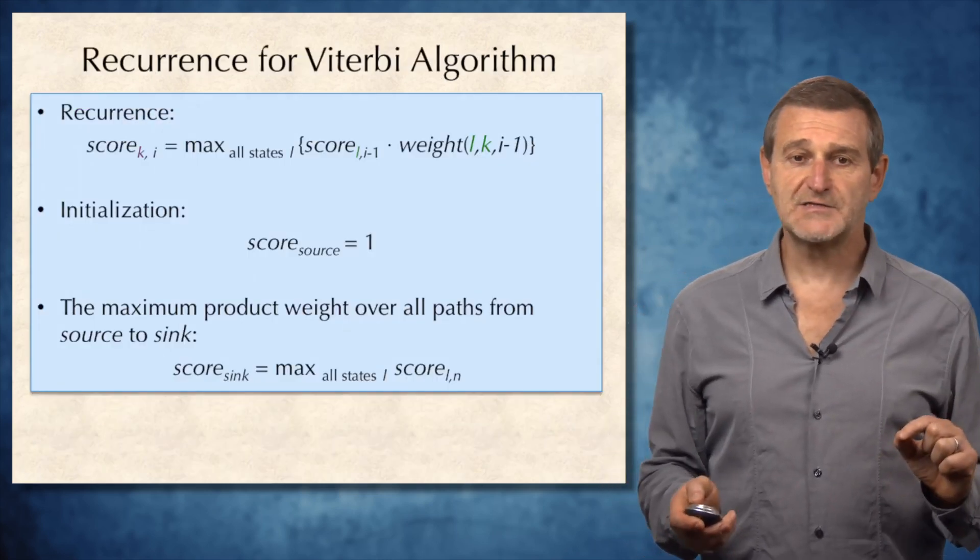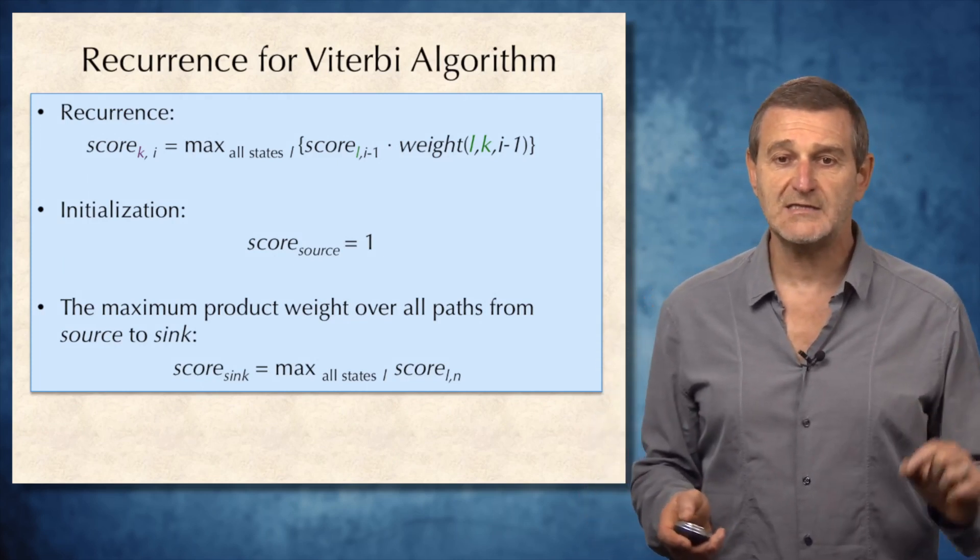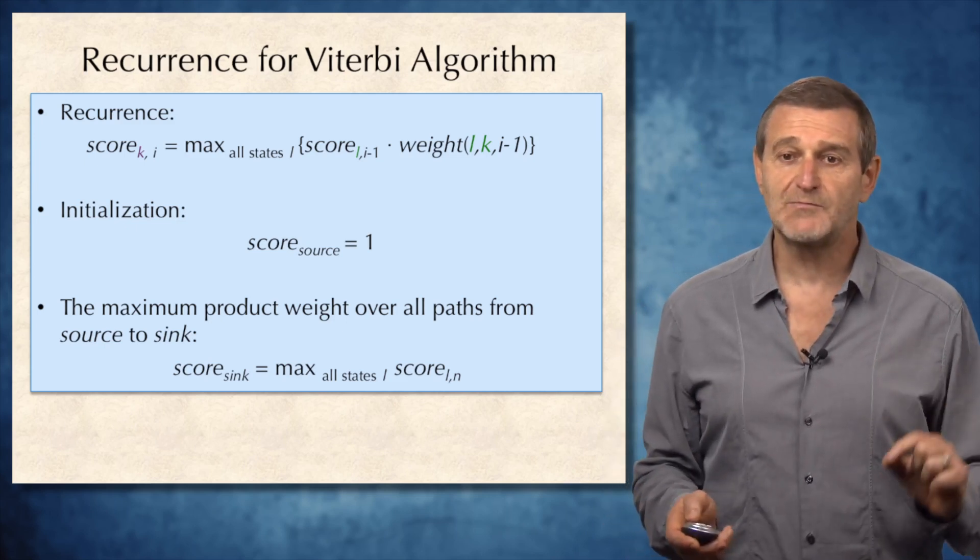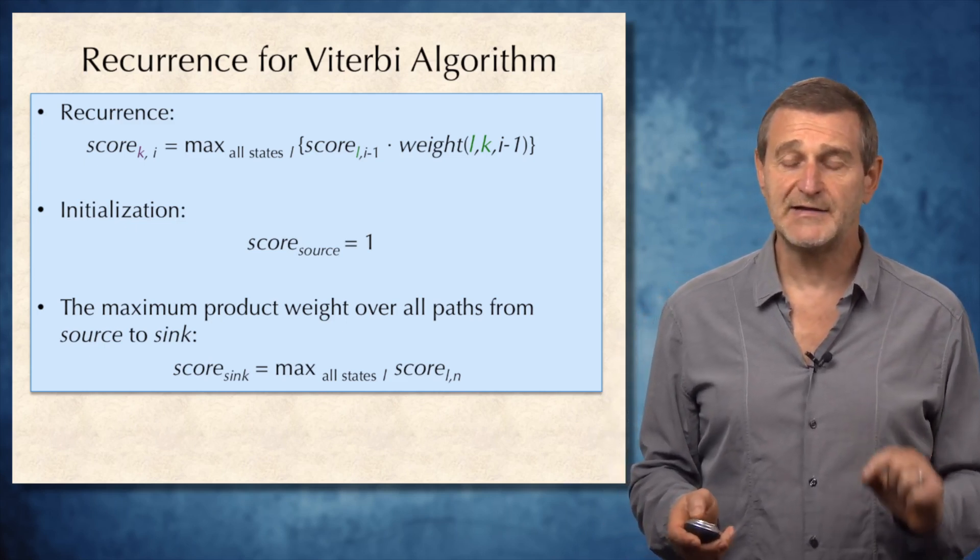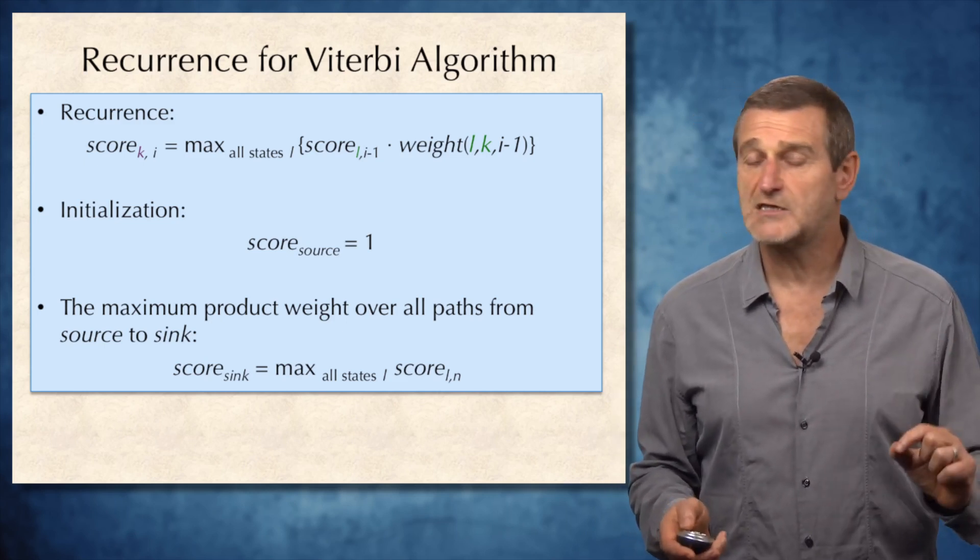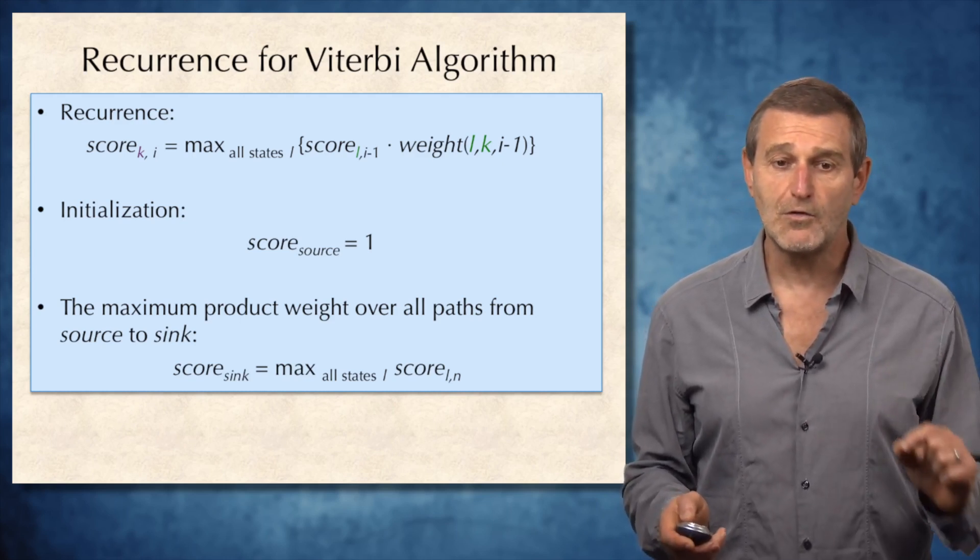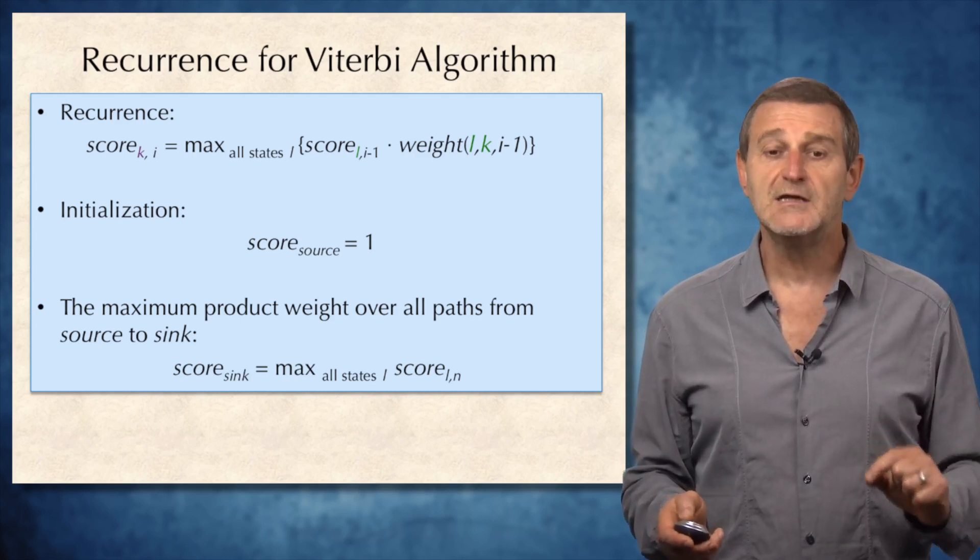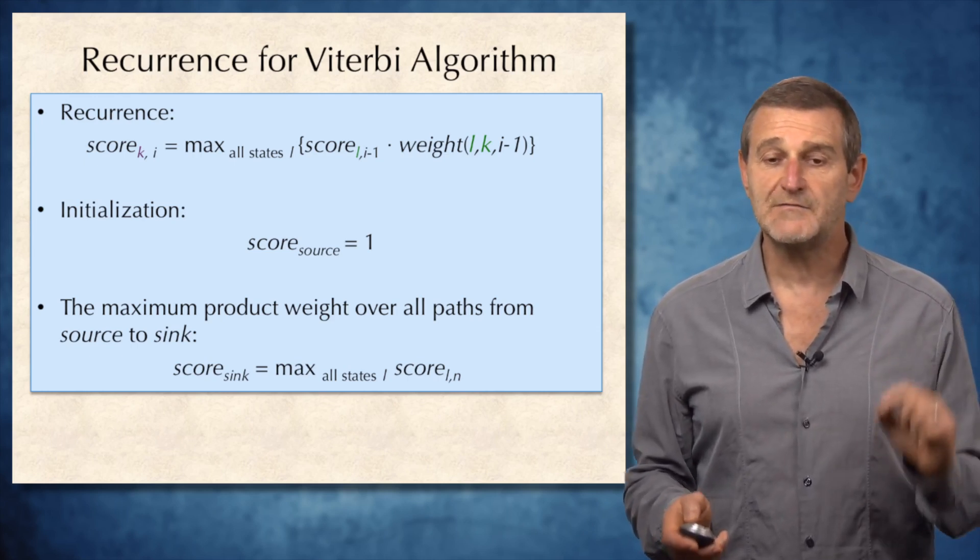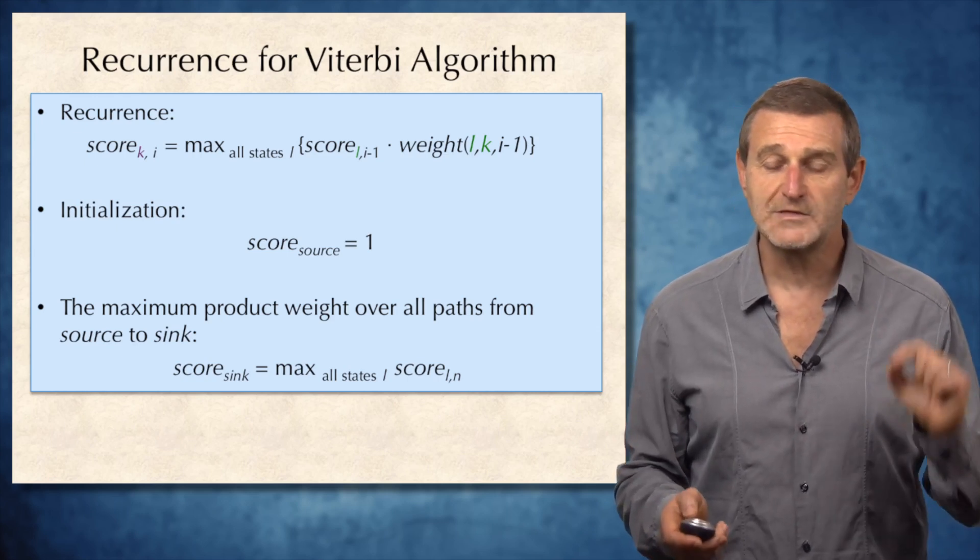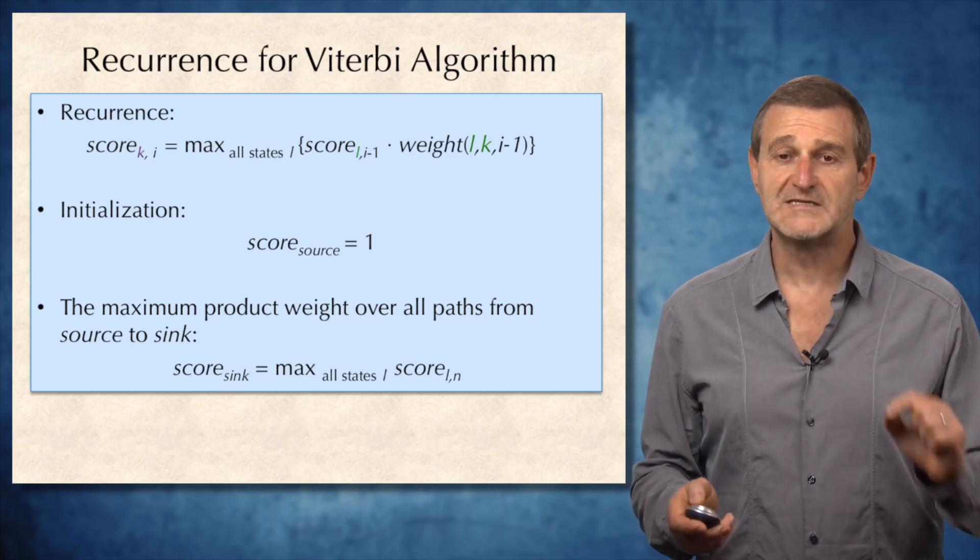So the recurrence for the Viterbi algorithm will be score_k,i equal to maximum through all states of score_L,i-1 multiplied by the weight of the edge L,K,i-1. The initialization, of course, is score at the source equal to 1, and the maximum product weight of all paths from source to sink is computed at the node sink, in which the score of sink will be maximum through all states of the scores in the last column of the Manhattan.